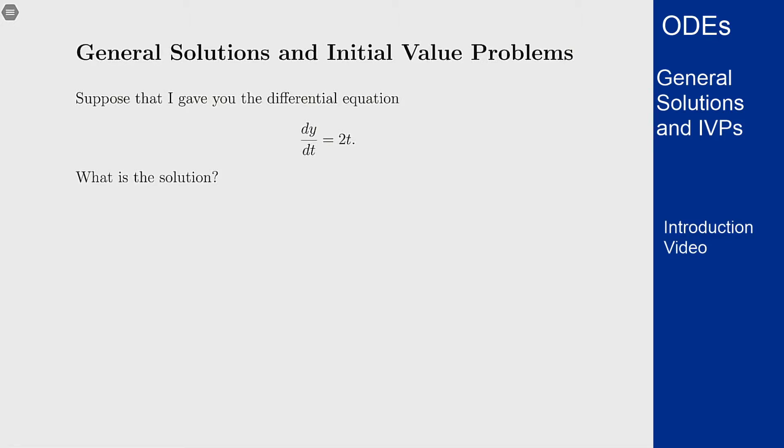Well this question is basically asking what is the function y(t) whose derivative is 2t? Thinking back to our Calc 1 knowledge from before, we know that y(t) = t² is a solution. If I differentiate t squared I get 2t back and that solves my differential equation.